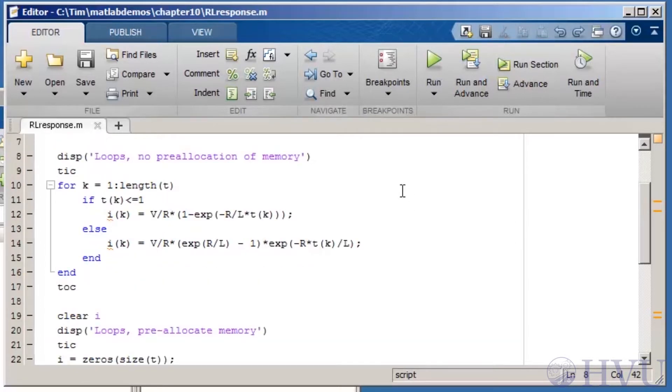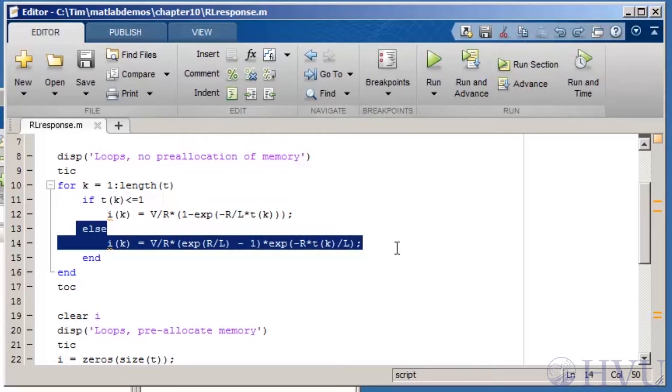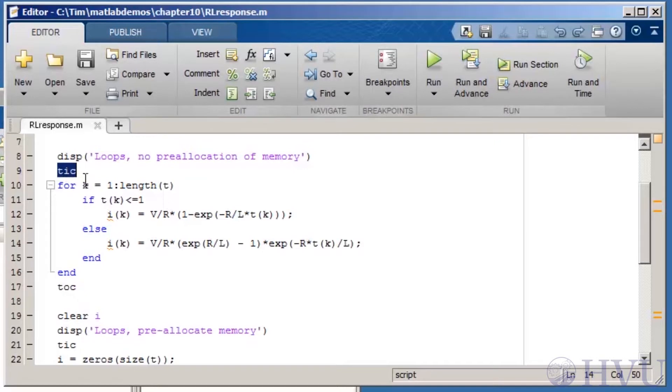The first approach I use to calculate the current in this file is to just loop through the time values, check whether the time is less than or greater than 1, and evaluate the appropriate equation. I've bracketed the set of code with the TIC and TOC commands. So MATLAB will display the time elapsed while executing the code.